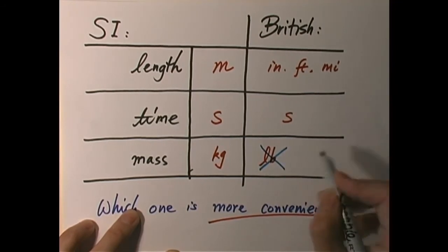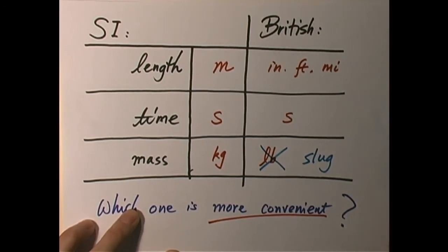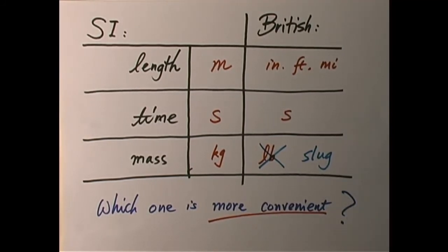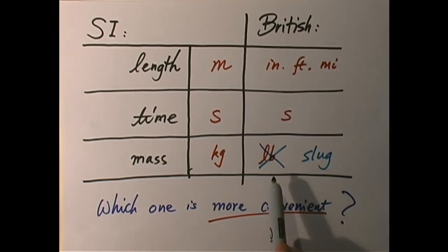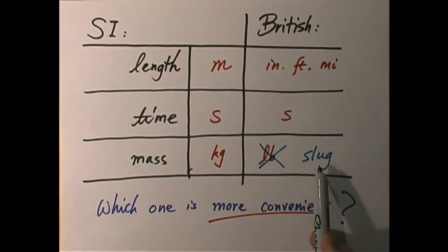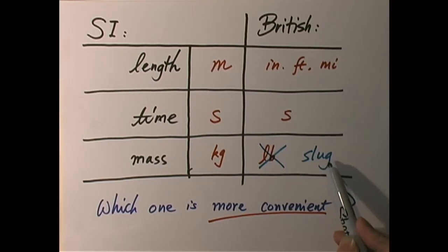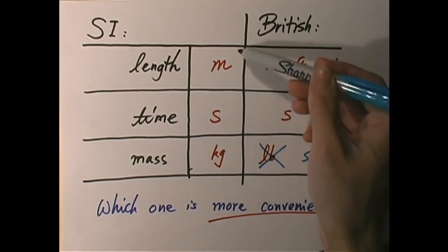We have an interesting name for it — we call it a slug. The name actually makes sense because, as we'll learn later, the more massive something is, the more difficult it is to accelerate, which means it becomes more sluggish if you push it with the same force. So the term slug makes sense. But remember, a slug is not a pound — they're not the same thing. If something has a mass of one slug, its weight on the surface is not exactly one pound. Having said that, we're not really going to use the slug much; we're going to mostly stick with SI units.